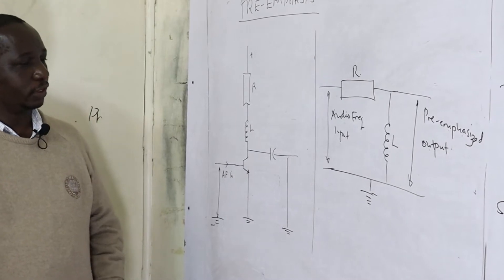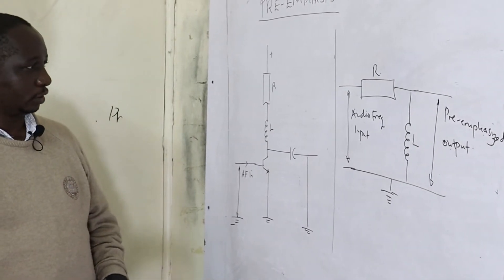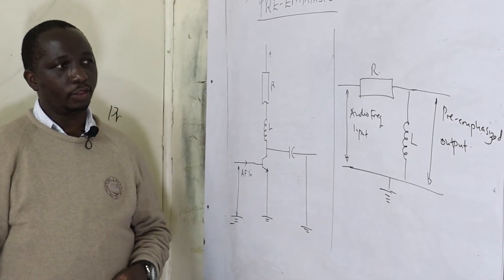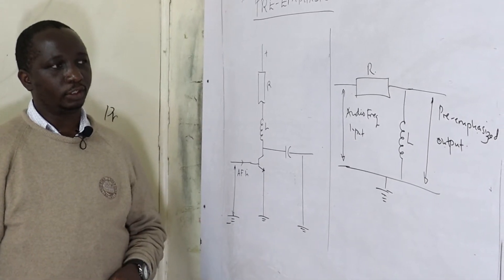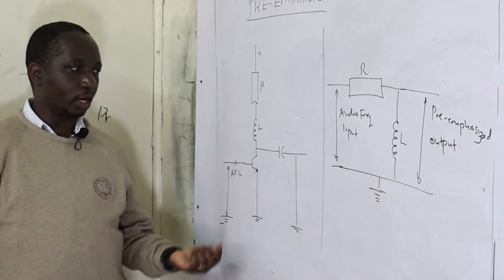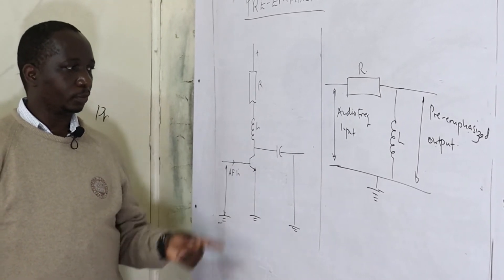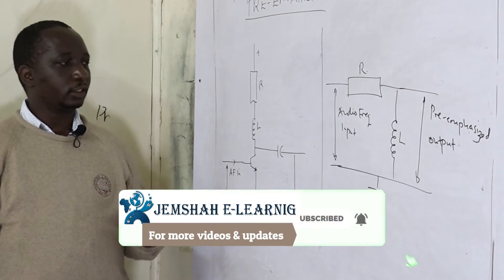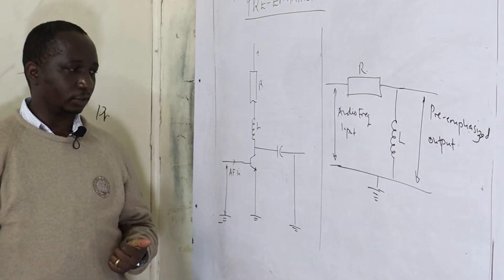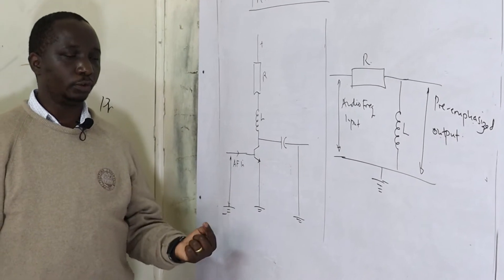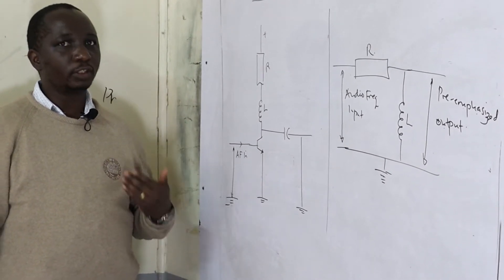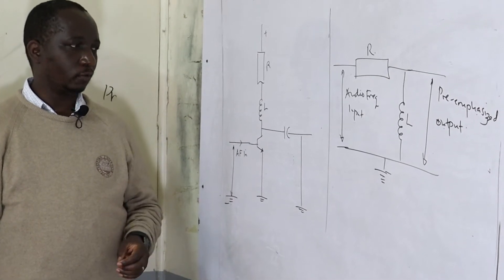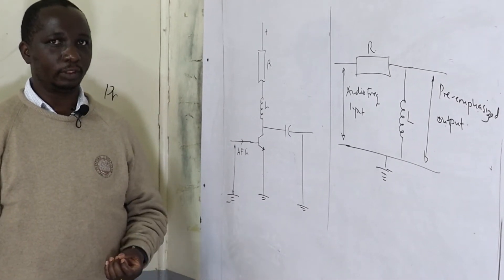When the signal frequencies are very low, they'll be conducted across to the output terminal. When the low frequency signal gets to the inductor, the inductor will see them as a DC function and they'll be able to conduct to the output. But upon these frequencies growing higher, the inductor will offer some resistance which will block the higher frequency.